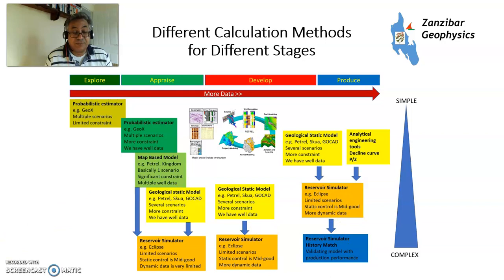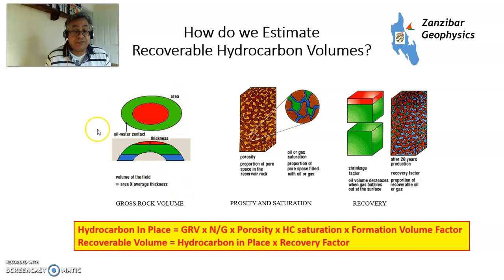To sum up: this is how hydrocarbon volumes are calculated. Hydrocarbon in place equals gross rock volume multiplied by net-to-gross, multiplied by porosity, multiplied by saturation, multiplied by the volumetric factor. Recoverable volume is hydrocarbon in place times the recovery factor.